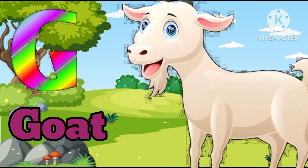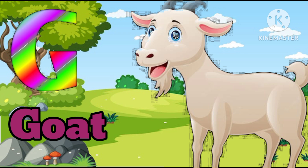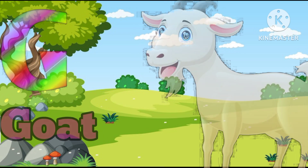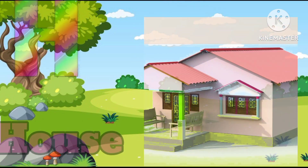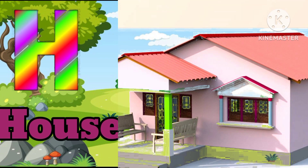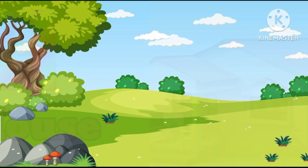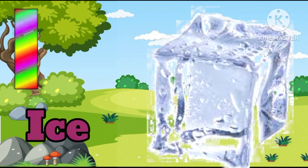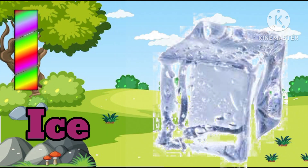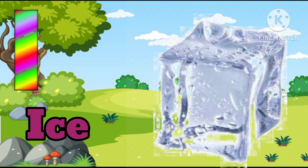G for goat, goat means buckri. X for house, house means garden. I for ice, ice means bark.